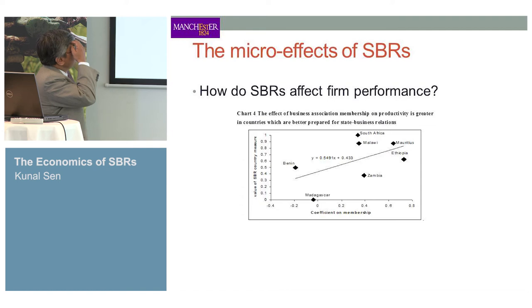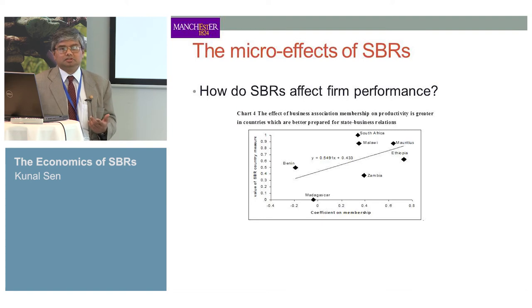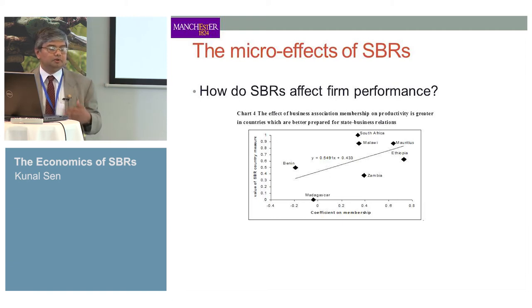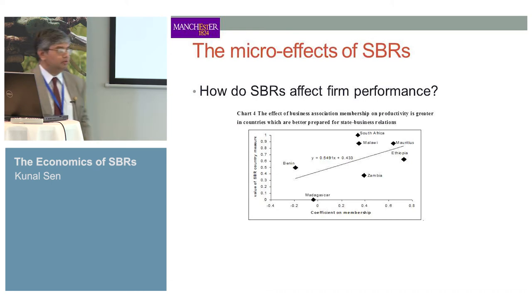We also looked at micro-effects of SBRs — if you are in a country with good SBRs and a member of a business association, what does it mean for firm productivity? We find that in countries with the best SBRs, firm membership in associations yields the biggest productivity gains. As a firm, if you happen to be in a country where SBRs are improving, you tend to see much more productivity gain from association membership. We found very similar results with Indian data.